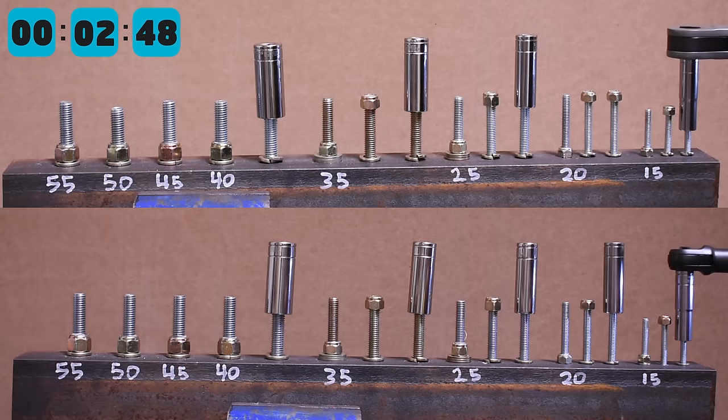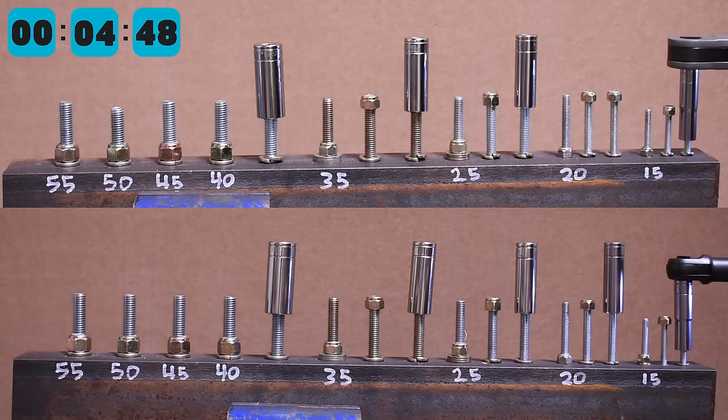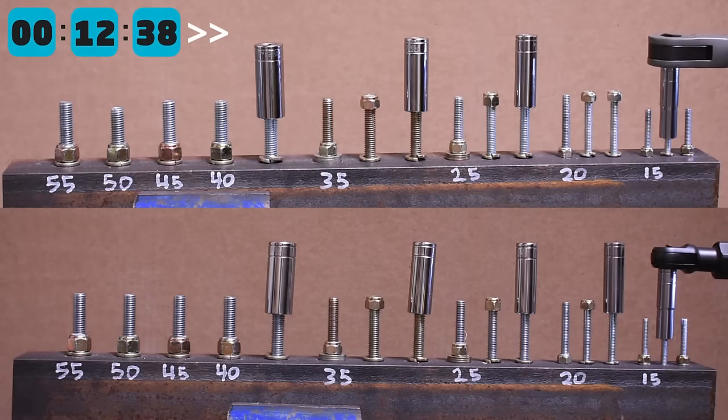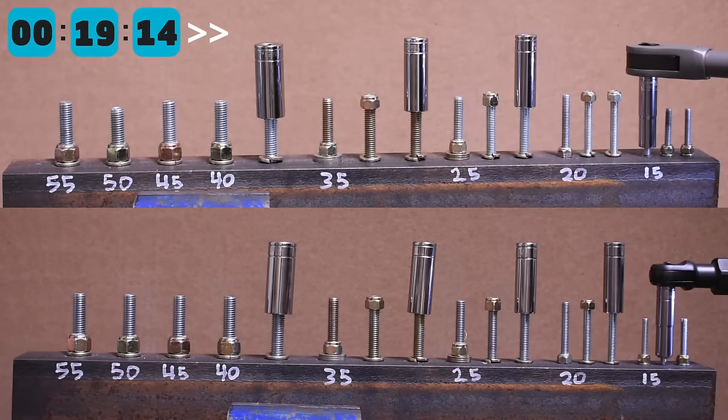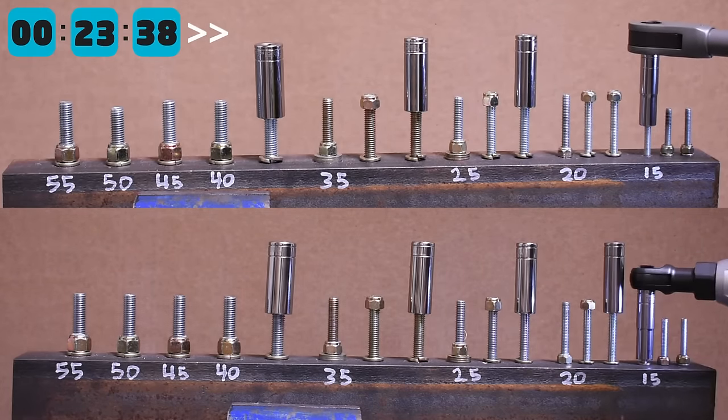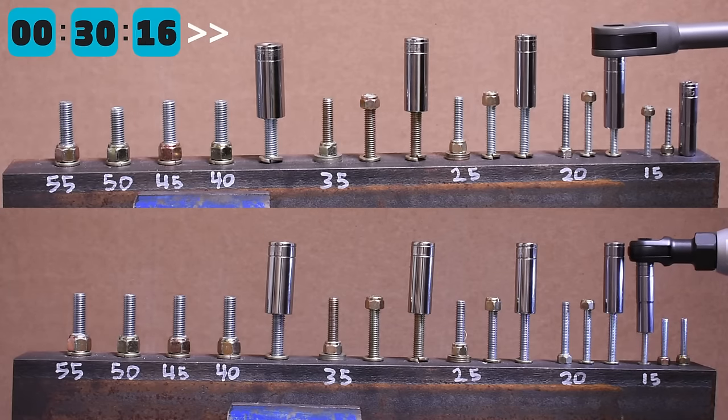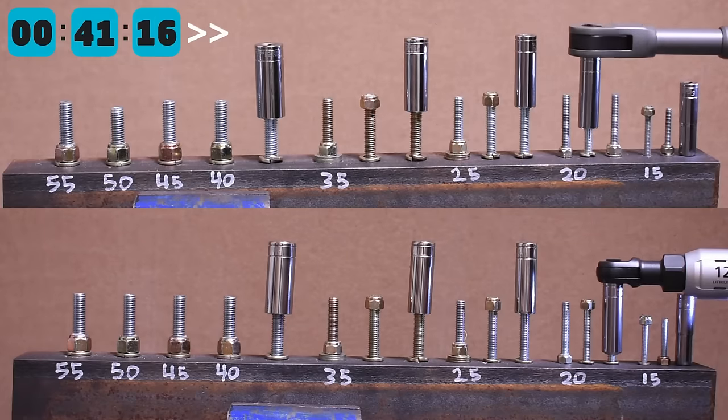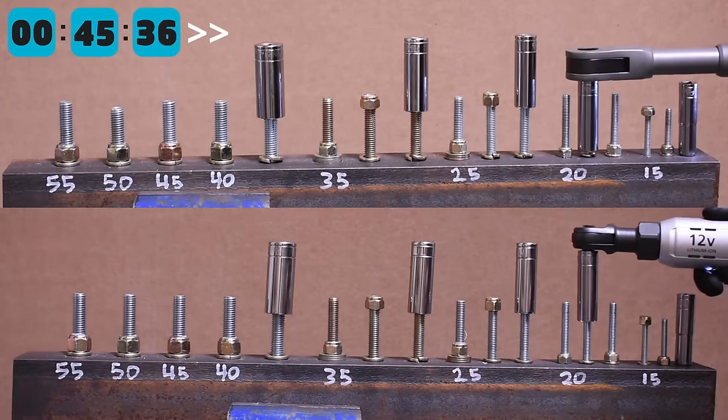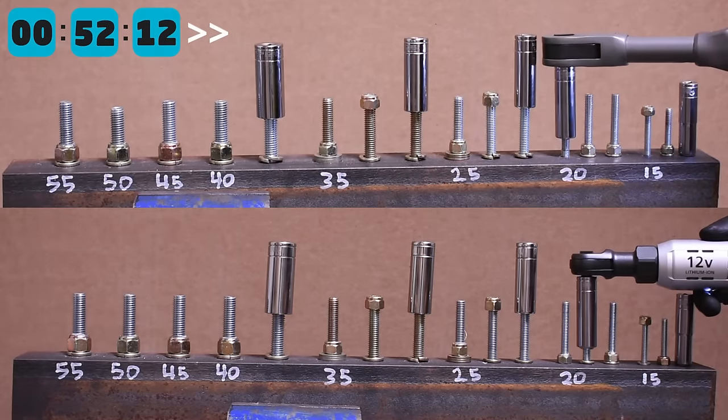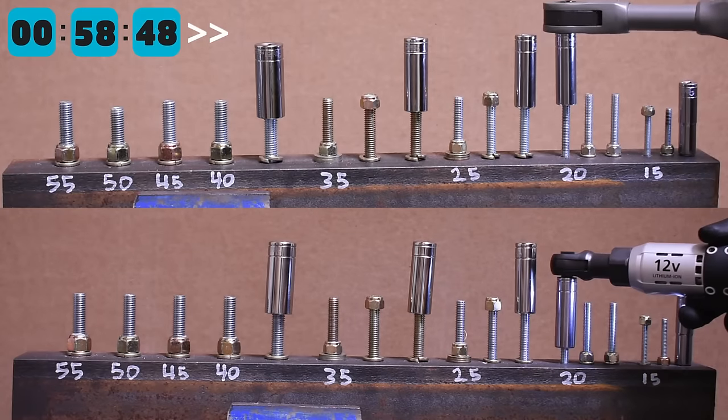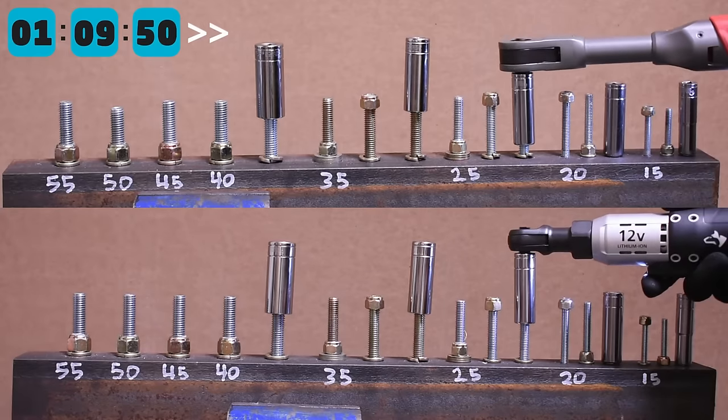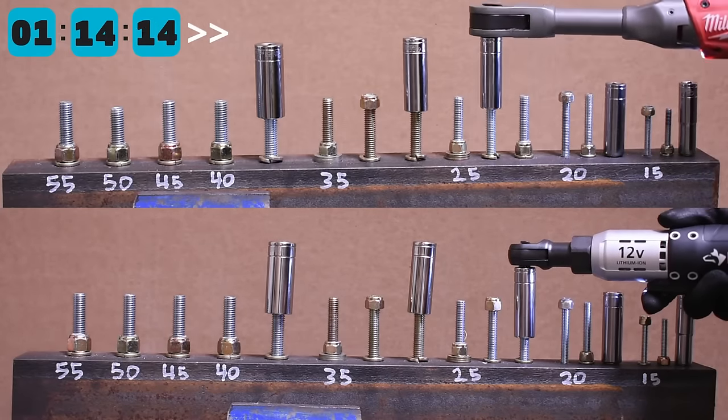Here's the Husky on bottom versus the closest in RPM Milwaukee. So I find RPM on ratchets a funny thing because free speed RPM in itself is not the whole picture. Here's an example of a 230 RPM Husky on the bottom, turning nuts pretty similarly or falling behind at times versus the 200 RPM rated M12 on top. Not in a damning way.